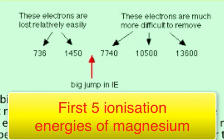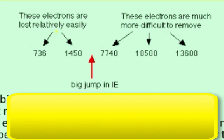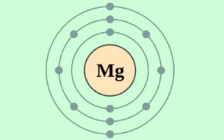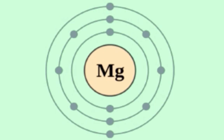Look at magnesium. These show the first few ionisation energies for magnesium. The first two ionisation energies are much smaller than the third one. Magnesium is in group two, so it has two electrons in the outer shell. The first two ionisation energies correspond to removing first one electron, then the next electron, from this outer shell.